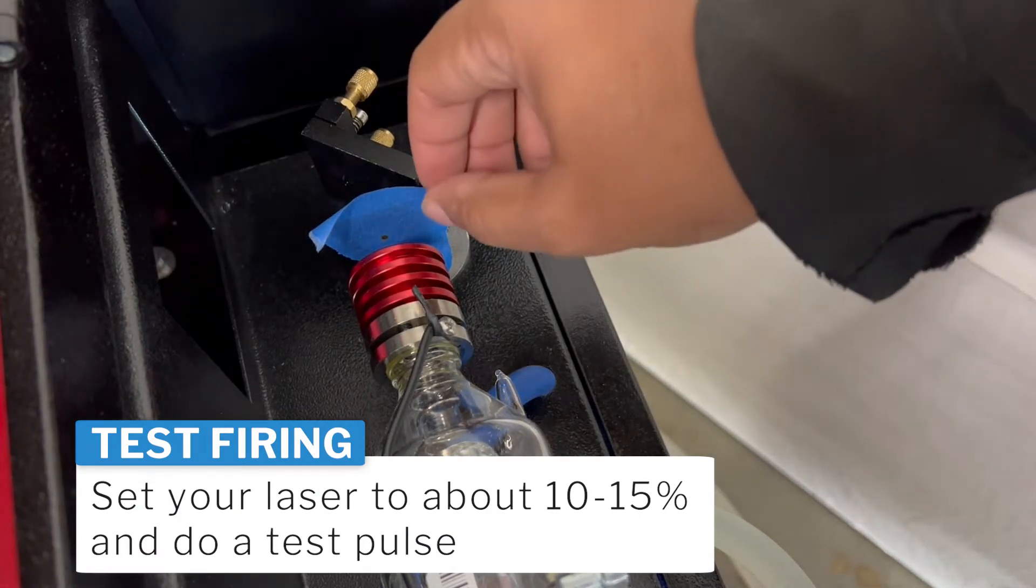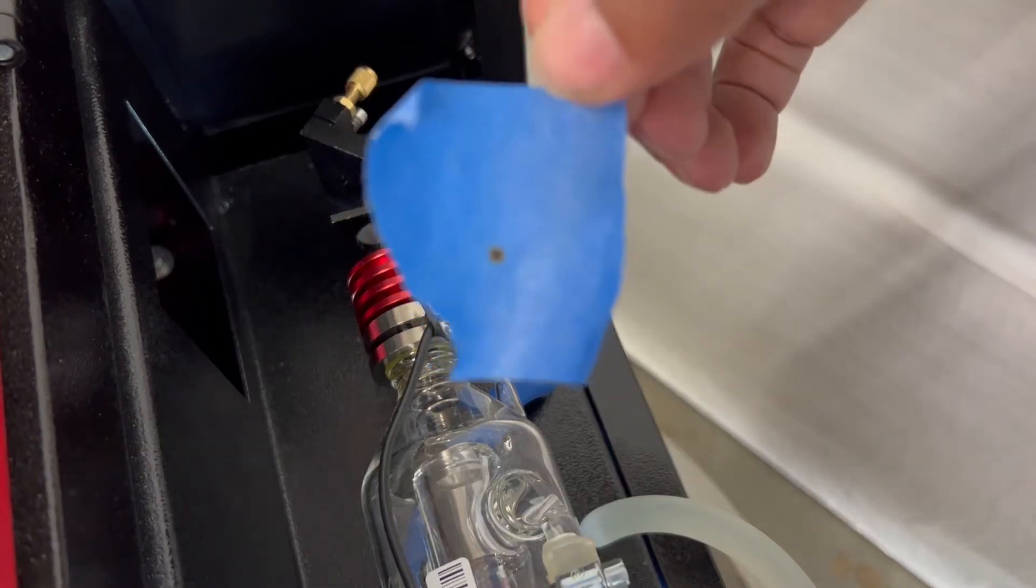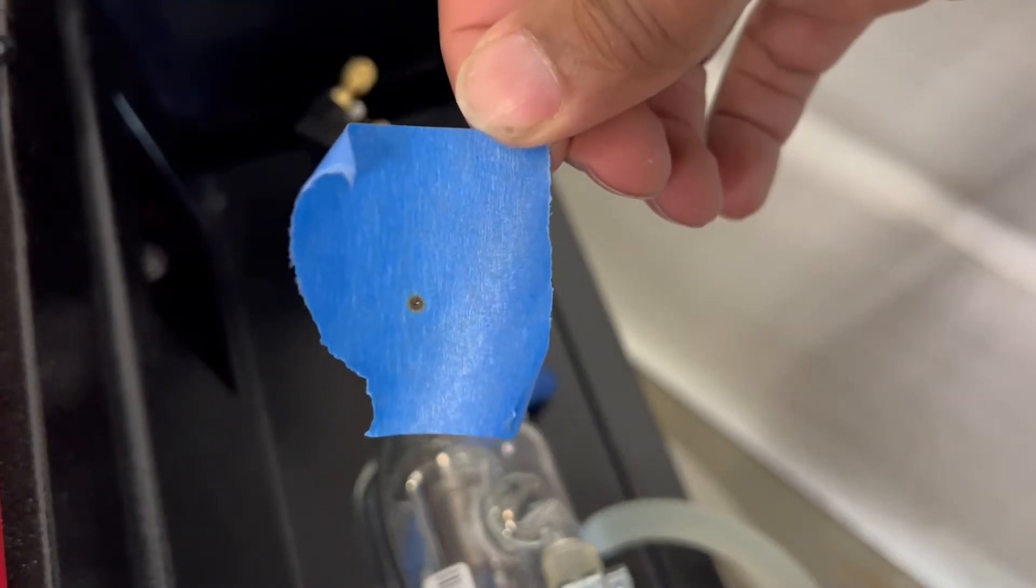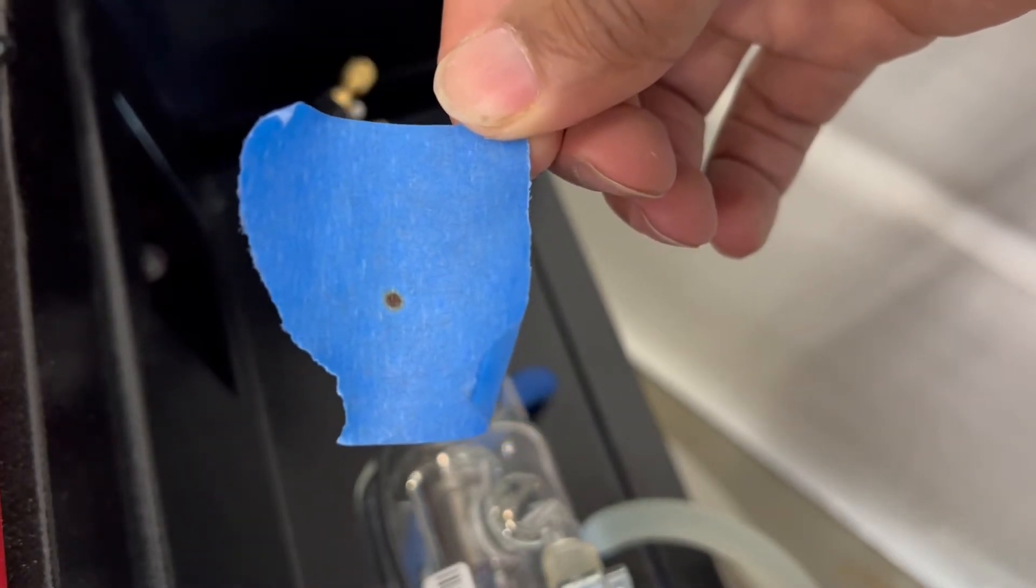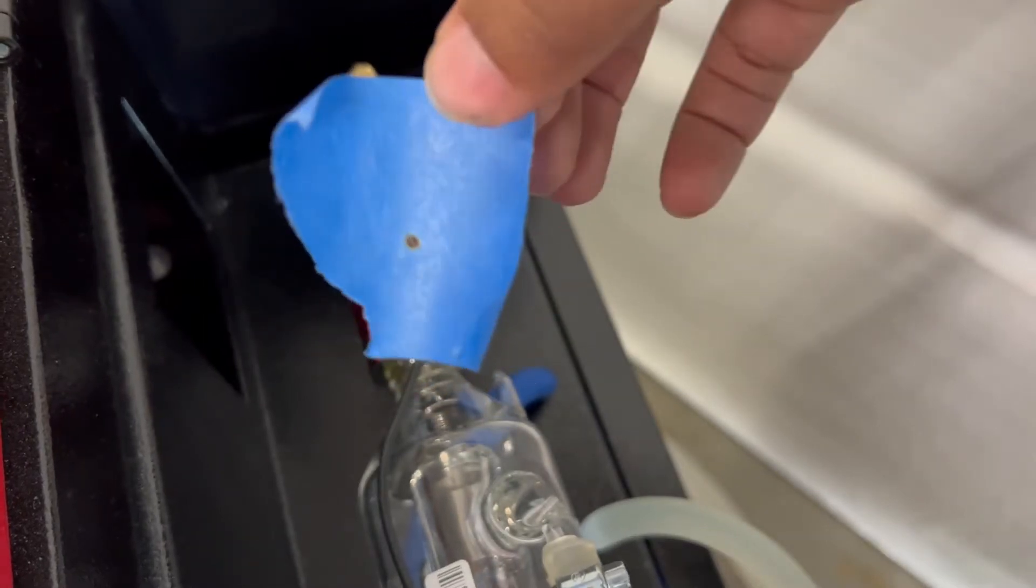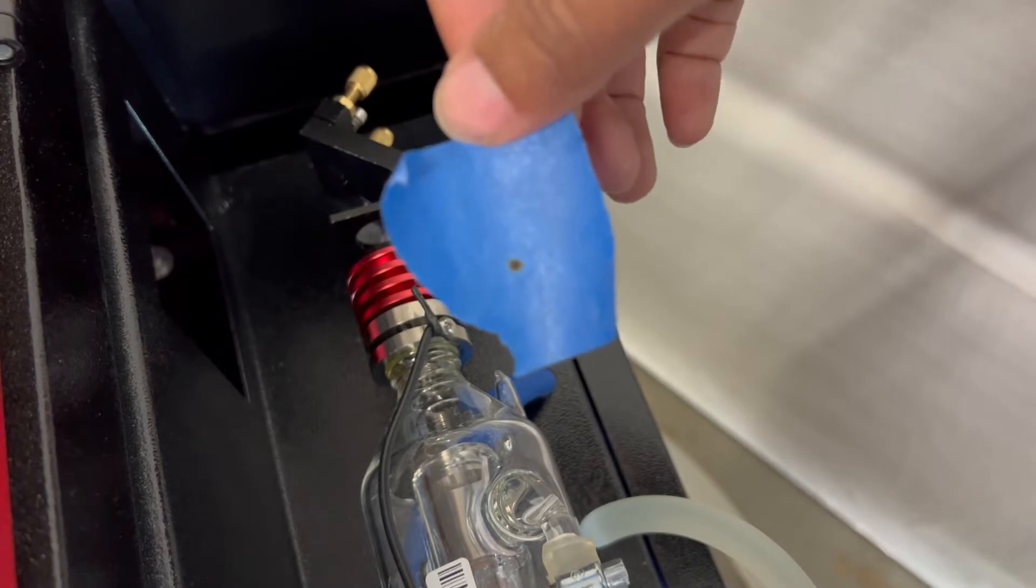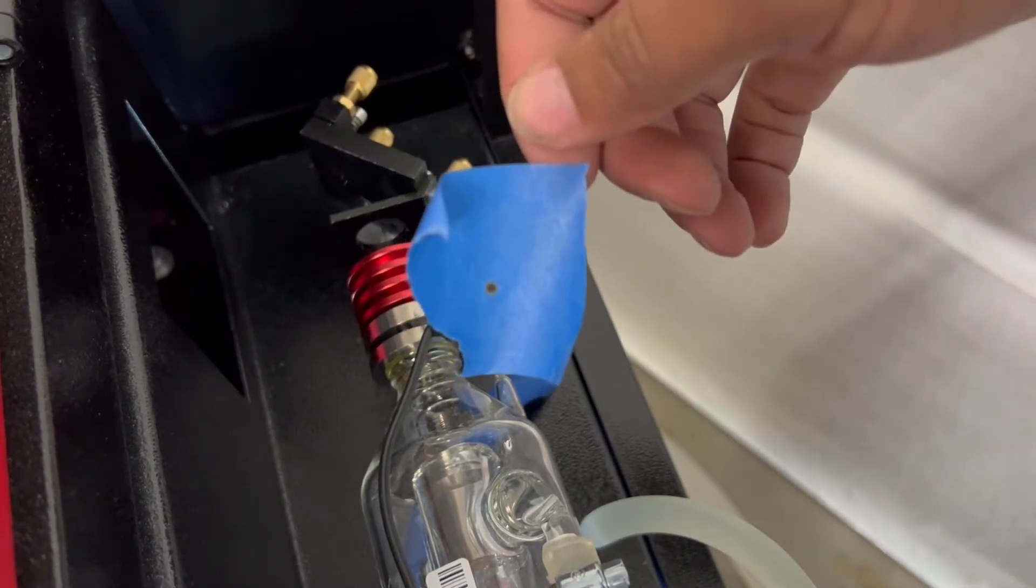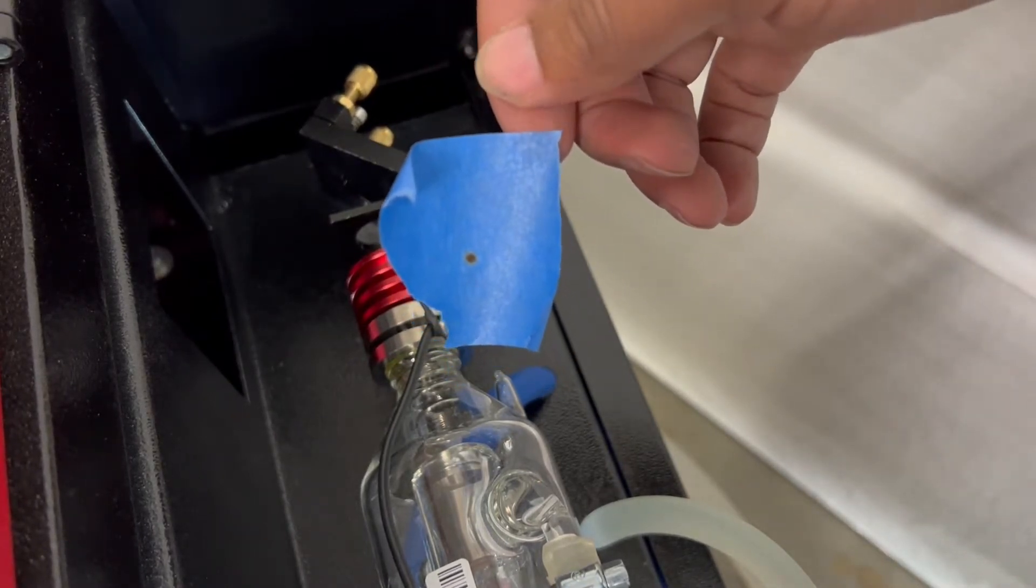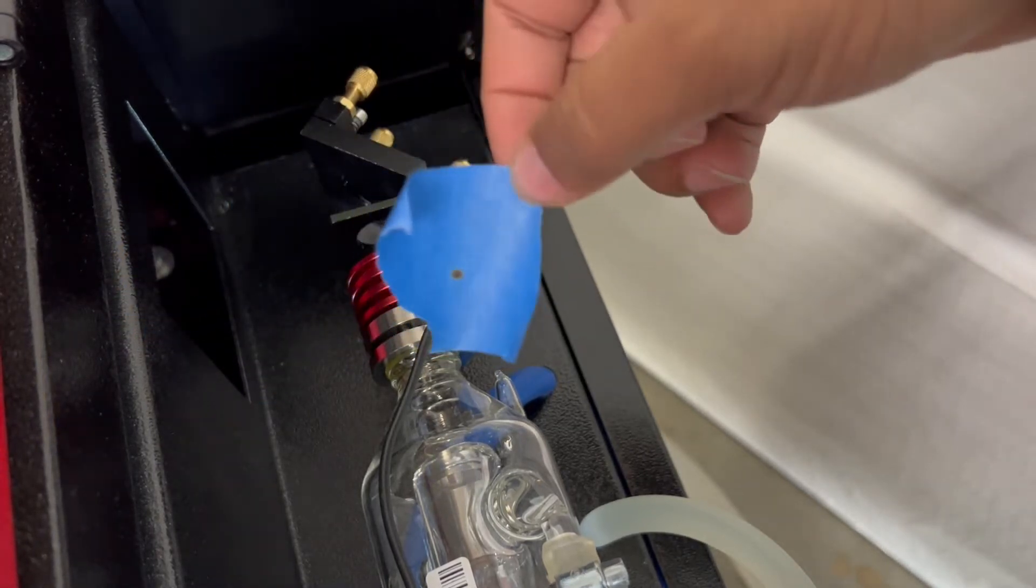So as we can see I did a test fire, I'm getting a tiny black dot right in the center so I know the laser is firing properly and I can see the indent in better lighting but I know exactly where my laser is hitting. So now what I'm going to do is I'm going to take another piece of tape and go to mirror two and do the exact same thing.